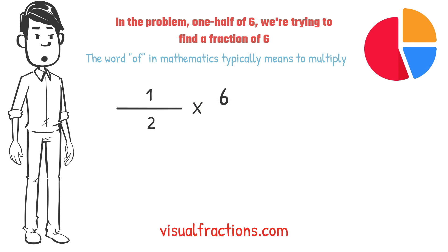To simplify the calculation, we first convert our whole number into fraction form, writing six as six over one. This transformation makes it easier to work with our numbers as fractions.